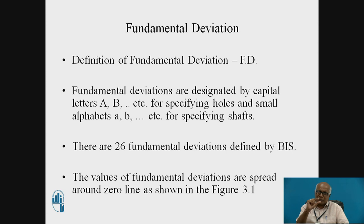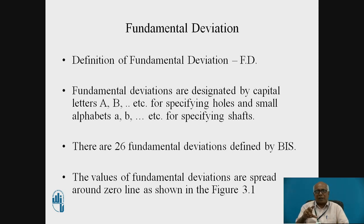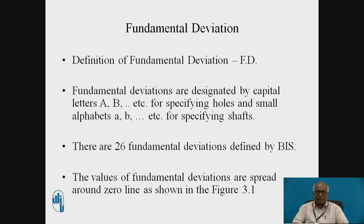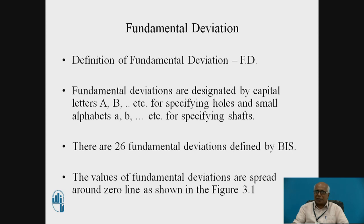The value of fundamental deviation decides the location of the tolerance zone with respect to the zero line. There can be innumerable choices for the design or production engineer. To bring standardization, Bureau of Indian Standards, in accordance with ISO, has specified 26 fundamental deviations, designated by letters — capital A, B, C, D for holes and lowercase a, b, c, d for shafts. A particular value of fundamental deviation is associated with each type, and these values are spread around the zero line as shown in figure 3.1.